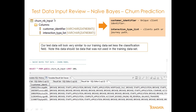Now let's look at the test data input. These are the unclassified events — people who have not churned, may be on a path to churn, or have churned but are not part of the original training data set. The churn_nb_input table has two columns: customer identifier and interaction_type_list, which is the client's current journey path. This looks similar to the training data but is a different, unclassified data set.